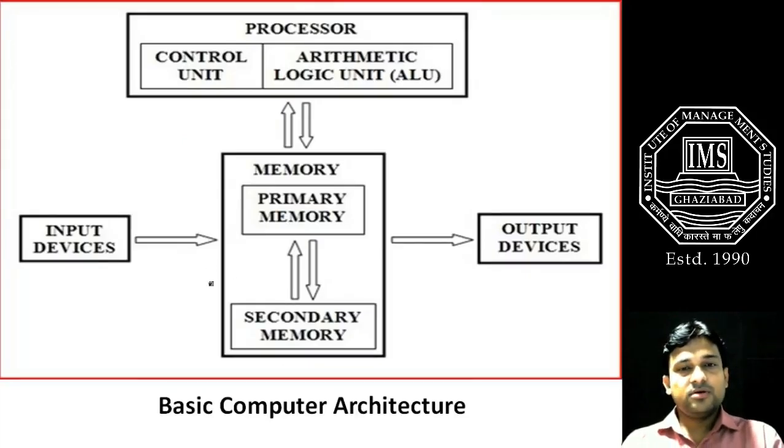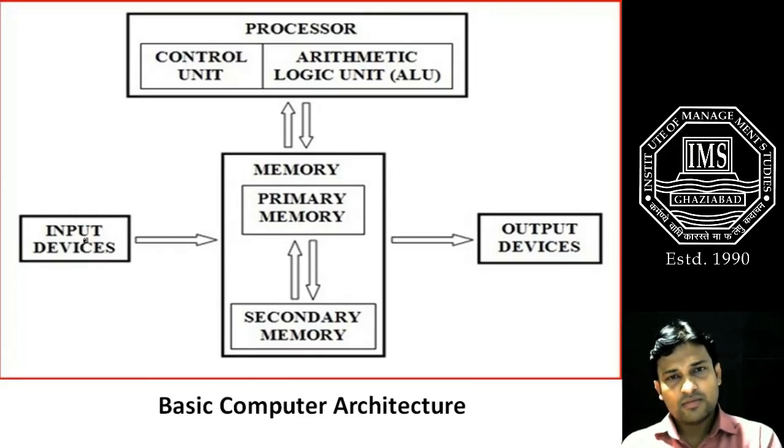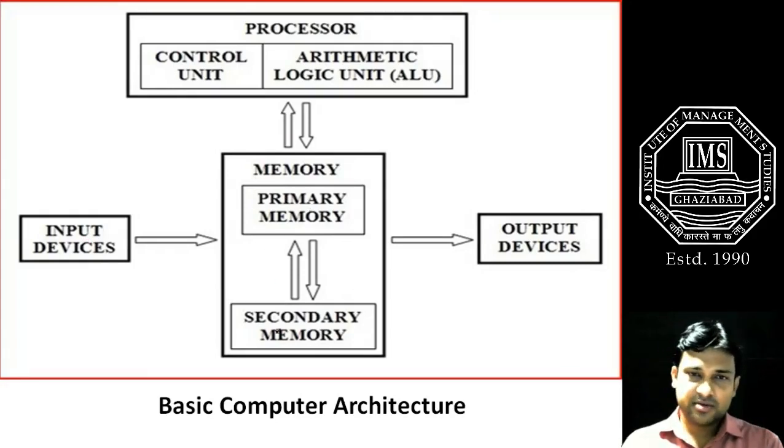We can view the basic computer architecture in this form. This is the basic nomenclature for any computer architecture. First, we input our data from any input devices. That data goes to the memory section or processor section. There is a bidirectional arrow between CPU and memory section. Memory section is primarily divided into two parts: primary memory and secondary memory.